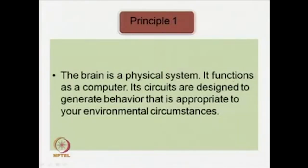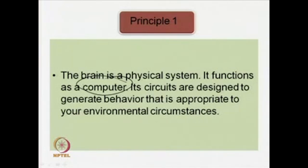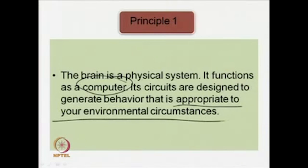Principle number one says that the brain is a physical system; it functions as a computer. Look at the analogy with the computer. Under the domain of evolutionary psychology, the mind is seen as a set of information processing machines — in the same way as the computer processes information. The brain is seen as a physical system, it functions as a computer, and its circuits are designed to generate behavior that is appropriate to your environmental circumstances. This principle is very carefully worded by the scholars.